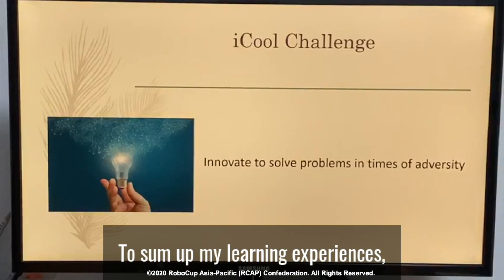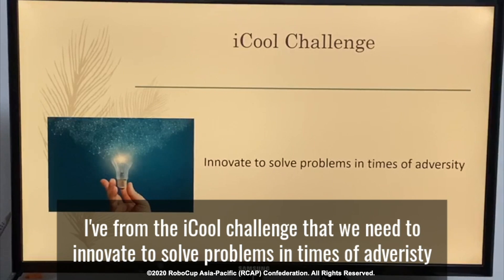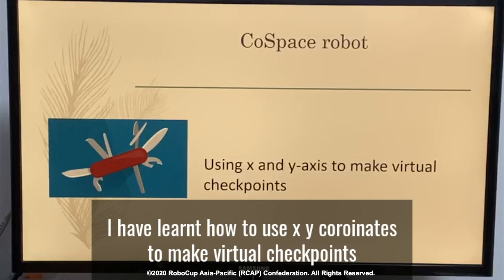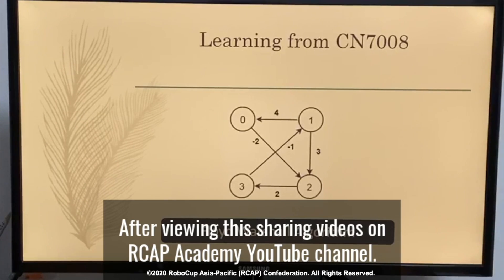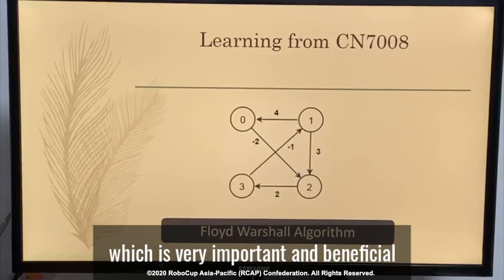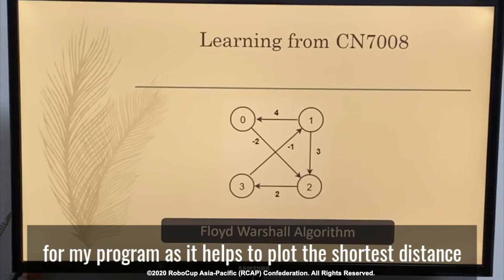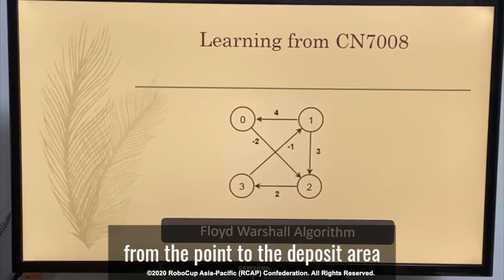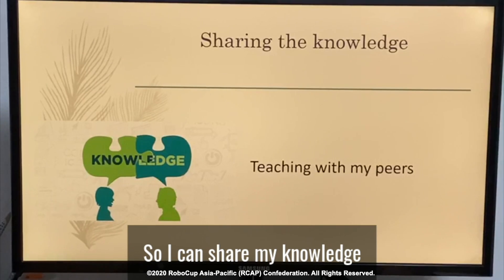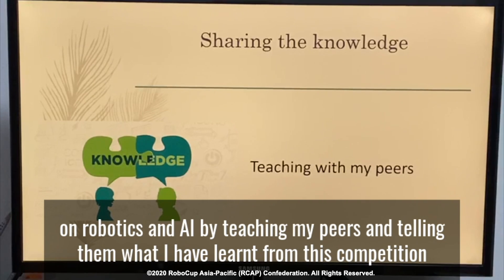Some of my learning experiences: firstly, from the ICO Challenge, I learnt that it's important to innovate in order to solve problems — for instance, I had to use the auto-deposit program in order to get the most points from their position. A second lesson learnt from the Cold Space competition is how to use X and Y coordinates to define virtual checkpoints, which is necessary for the auto-deposit program. After viewing sharing videos on the RCEP Academy YouTube channel, I'm more interested in learning from CN7008 due to its Floyd-Warshall algorithm, which is very important and beneficial for my program as it can plot the shortest distance from one point to the deposit area, reducing the time taken to reach it, so I can share my knowledge of robotics and AI with others by teaching my peers about what I've learned from this competition.